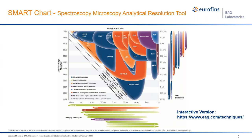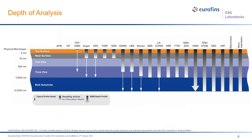Outside the main box are bulk composition techniques that may consume your entire sample, and imaging techniques at the bottom that don't provide compositions but have relevance with respect to spot size. An interactive version of this chart can be found at our website, www.eag.com/techniques—definitely helpful in determining what technique you might need for your specific analysis.